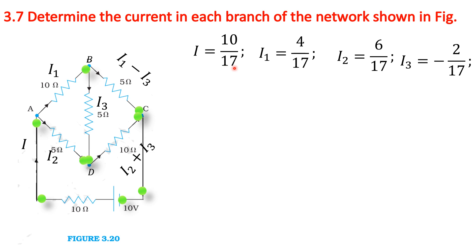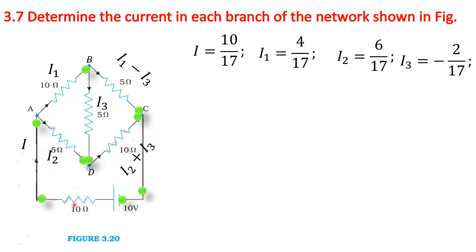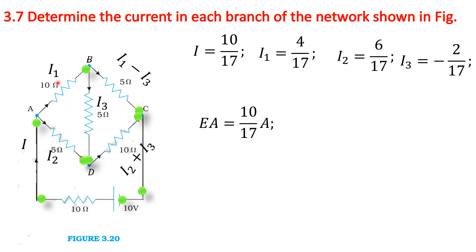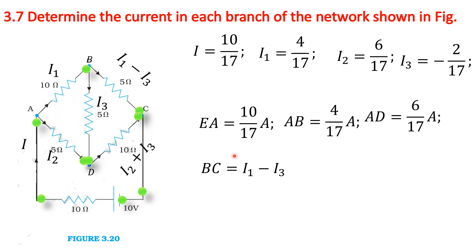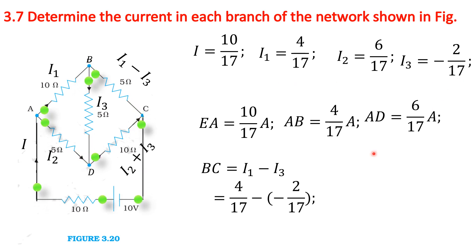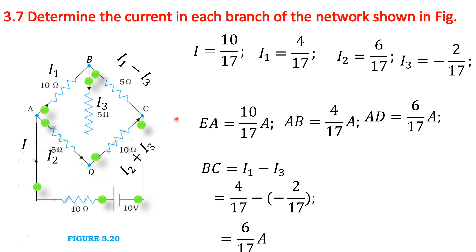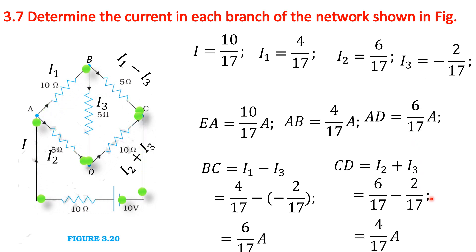Now we state the current in each branch. In the EA branch: I equals 10/17 ampere. In the AB branch: I1 equals 4/17 ampere. In the AD branch: I2 equals 6/17 ampere. In the BC branch: I1 minus I3 equals 6/17 ampere. In the DC branch: I2 plus I3 equals 4/17 ampere.